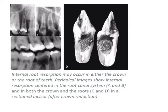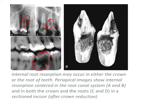Images are very important — you should be able to identify pathologies from images. Images A and B show internal resorption within the root canal, present in both crown and root. This is a sectioned incisor after crown reduction, showing what internal root resorption looks like.